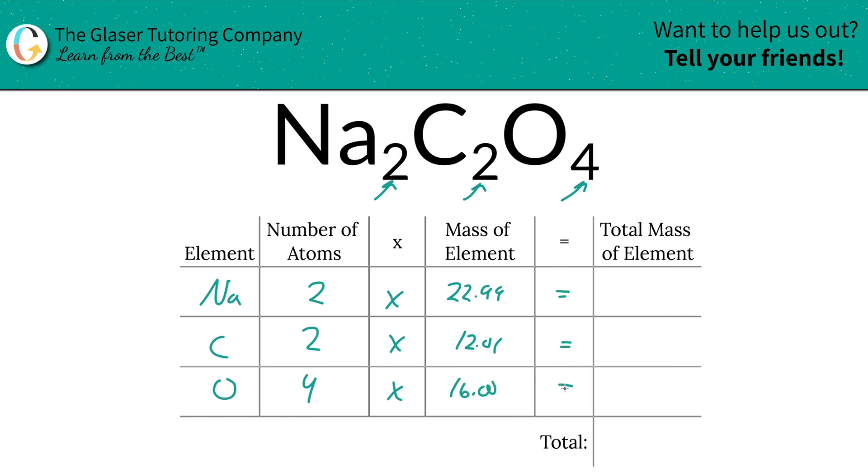Then to find the total mass of each particular element in the compound, we're simply going to multiply this row across. When we multiply sodium's row across, it becomes 45.98. That's the total mass of sodium. Total mass of carbon is going to be 24.02, and the total mass of oxygen is going to be 64.